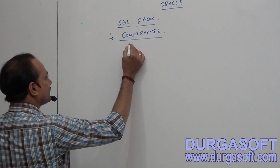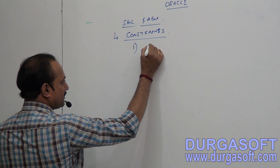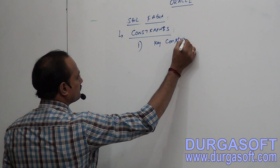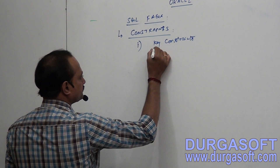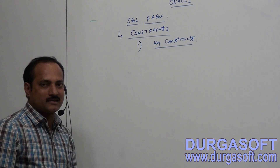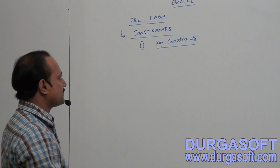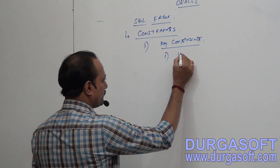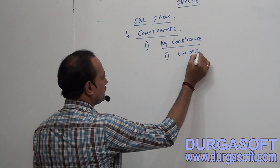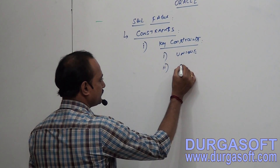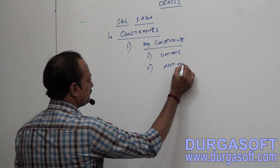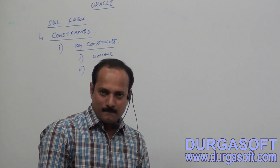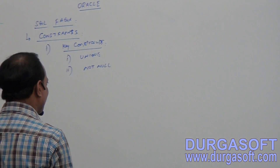There are two kinds of constraints. The first category is key constraints. What are key constraints? Key constraints are of two types: the first one is unique and the second one is not null. These two constraints are helpful to maintain consistent data within the database tables.